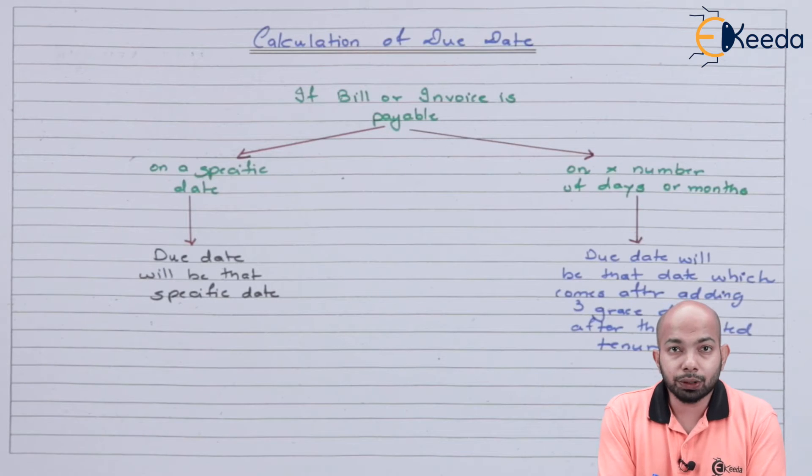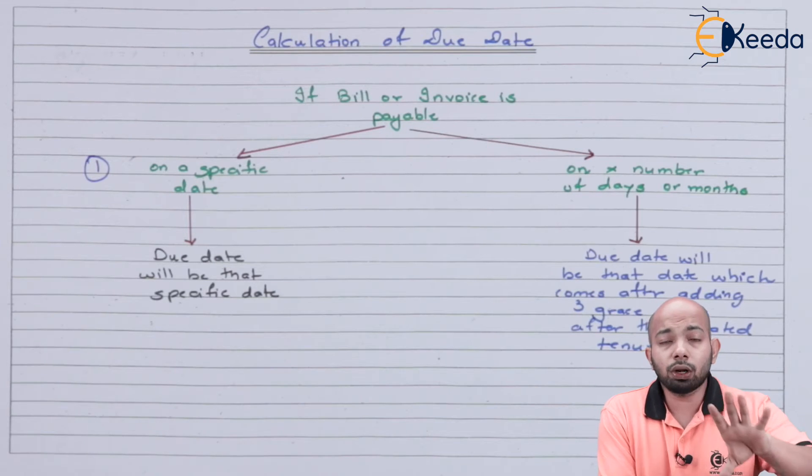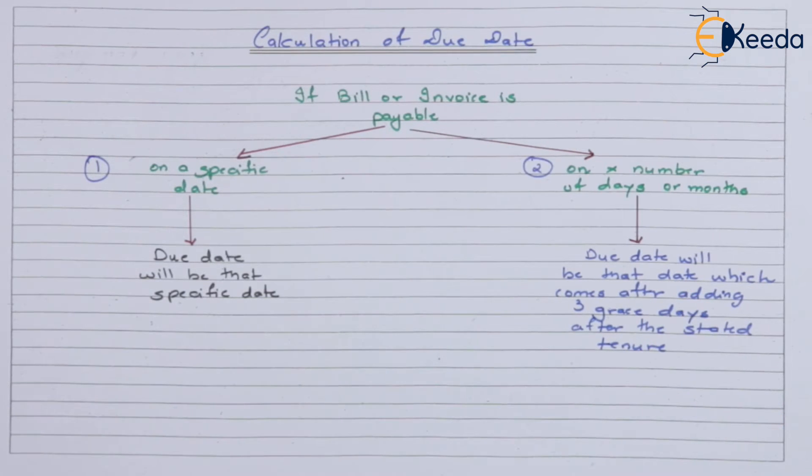This payable bill will have two basic situations. First, which is on a specific date, that means that invoice or bill is payable on a specific date. Second situation will be where that invoice or bill is payable after a certain period of time. That may be after X number of days or that may be after X number of months. Maybe three months or maybe after 90 days or maybe after 120 days, 180 days and so on. So these are the two situations. You do not know the exact date but you know that it will be done after three months. So one is certain, one is uncertain.